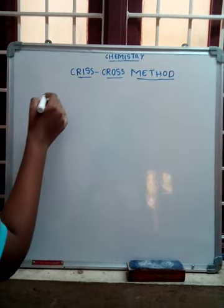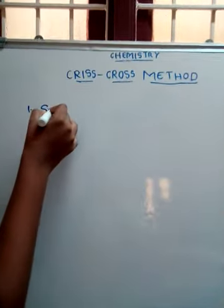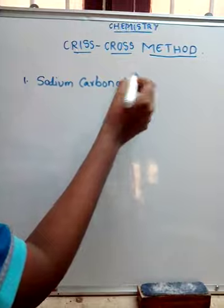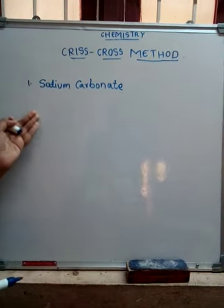First, we will take sodium carbonate. Now, you have to write the formula for this. It will be hard to memorize, but by criss-cross method it will be easy.